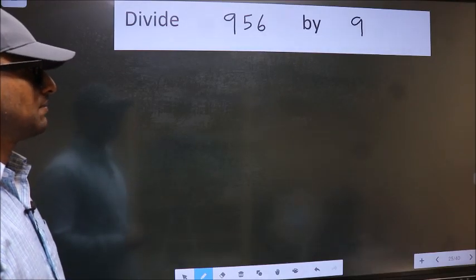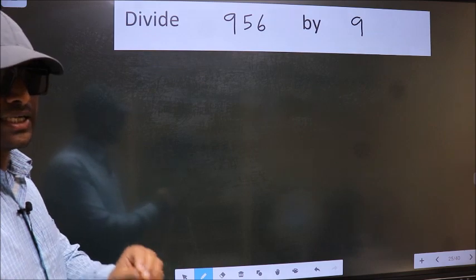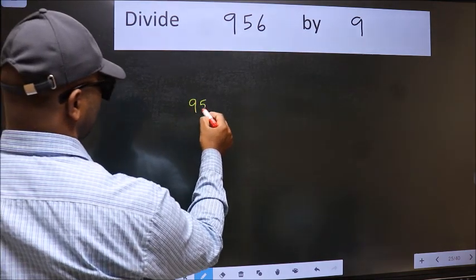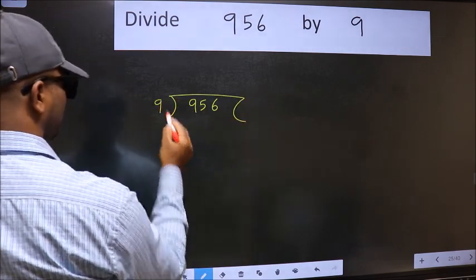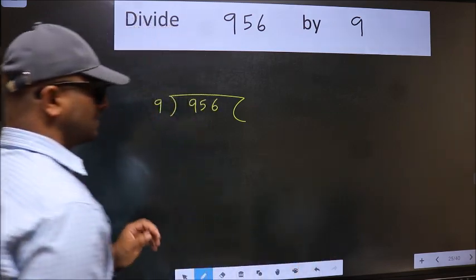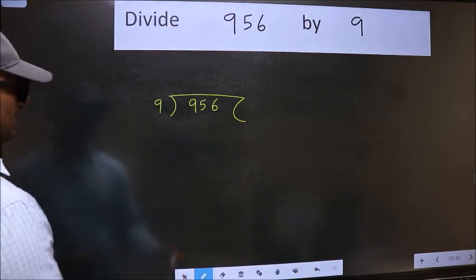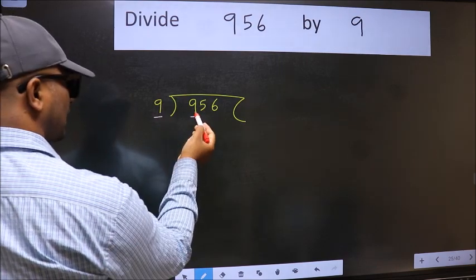Divide 956 by 9. To do this division, we should frame it in this way: 956 here and 9 here. This is your step one. Next, here we have 9 and here 9. When do we get 9 in the 9 table?